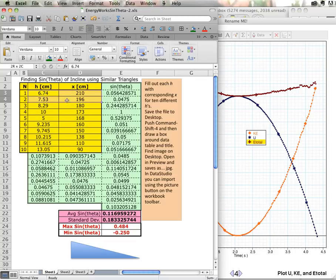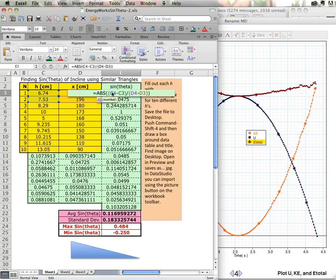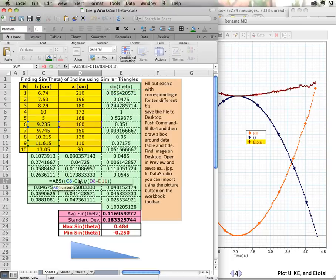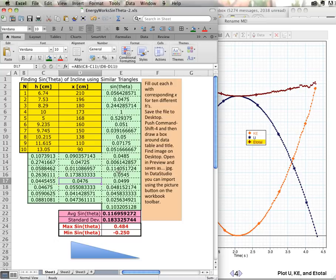Now with these two values right here we can calculate sine theta. Here's the formula, taking these two data points to find sine theta. But we can find sine theta between these two, between 6 and 9, or between 6 and 10. All of these values in green are different values for sine theta using similar triangles based upon this data.